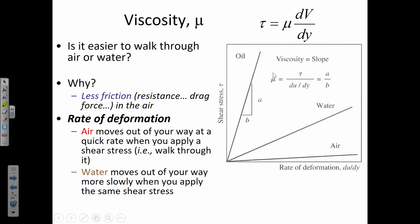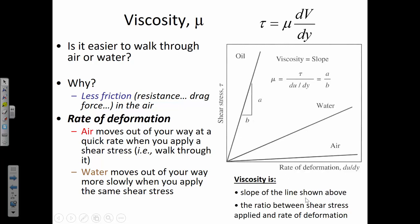The slope of those lines is the viscosity. Graphically, we can think of it as the slope that relates shear stress and rate of strain. Quantitatively, it's the ratio between those two in the equation. Here du/dy is the same as dv/dy — it's just a notation difference. So the slope of that line is viscosity. We can also think of it as the ratio between shear stress and rate of strain.